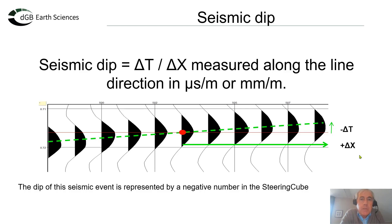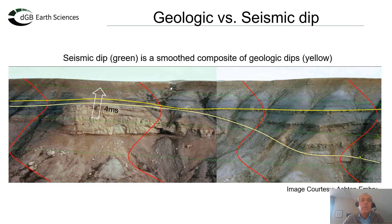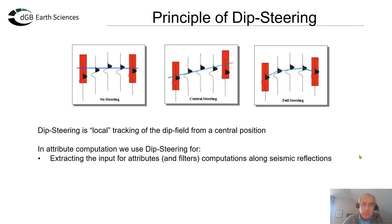What is the seismic dip? It's a measurement expressed as delta t over delta x. We're basically following or expressing how much the seismic event is dipping relative to the position in the middle. Seismic dip is of course related to geologic dip, but basically it's a smooth composite of geologic dip, which is a much finer scale, as you can see here in this comparison.